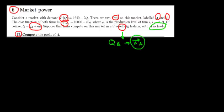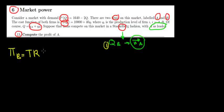Our first step is to calculate the optimal quantity of firm B. For that, we need to know the profit function of player B, which is going to be the total revenue of player B minus the total cost of player B.